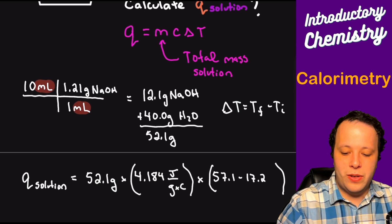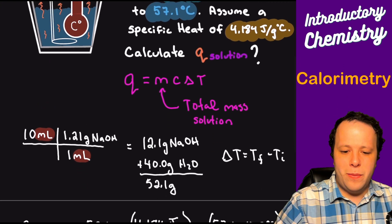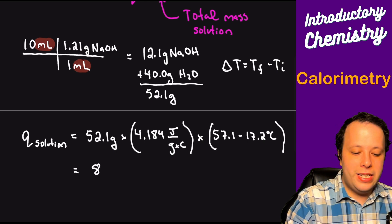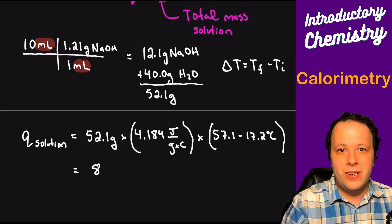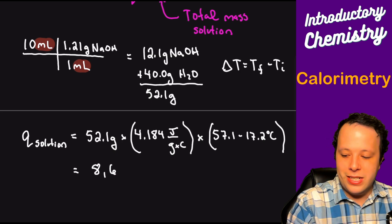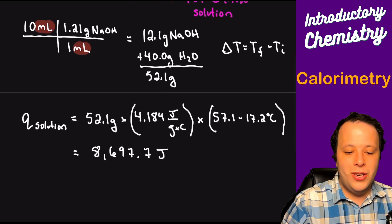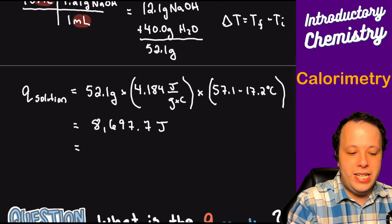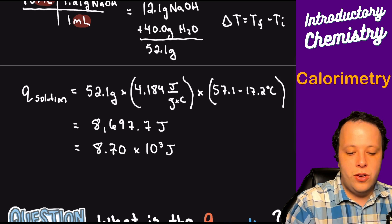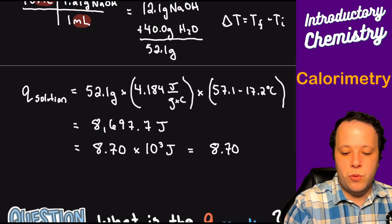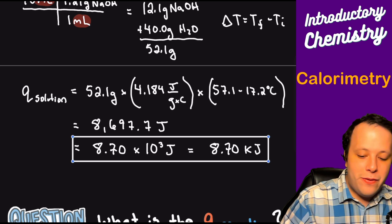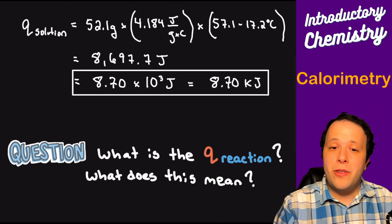Delta T is 57.1 minus 17.2 degrees C. Multiplying 52.1 times 4.184 times (57.1 − 17.2), we get 8,697.7 joules. Rounded to three significant figures and expressed in scientific notation or as kilojoules, this is our answer for q of the solution.